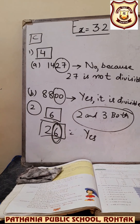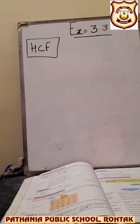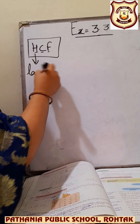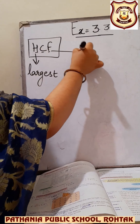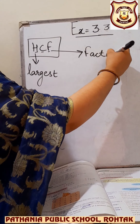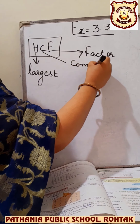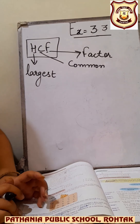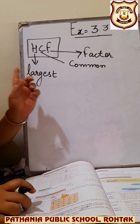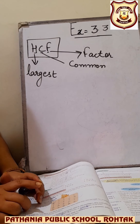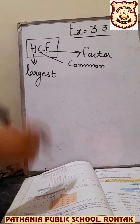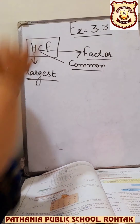Now let's start exercise 3.3, which is related to HCF — Highest Common Factor, or you can say Largest Common Factor. H stands for highest, C stands for common, and F is factor. Since the word 'common' is involved, you need a minimum of 2 numbers. You can only find HCF if there are at least 2 numbers, though there can be more. You have to find the largest common factor.